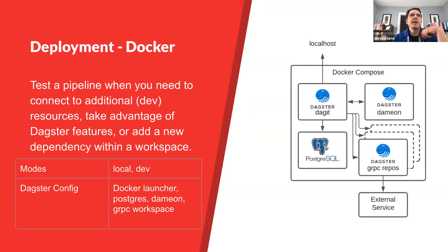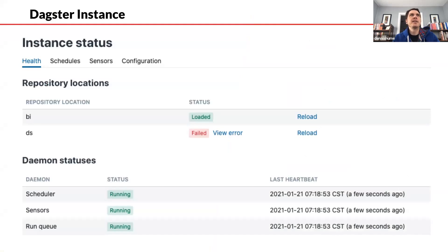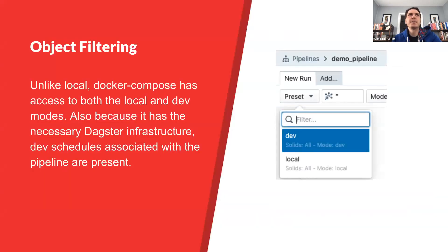Moving up to our Docker environment, this is where we really start to take advantage of Dagster's flexibility around running different instances and deployments. We can use pretty much what we'd use in production, except with a Docker launcher instead of a custom ECS launcher for AWS. The instance is different because we have multiple repositories — the BI repository and the data science repository. The Dagster daemon is also running in this environment, and for object filtering you now have access to both local and dev for presets and modes, and schedules are present.